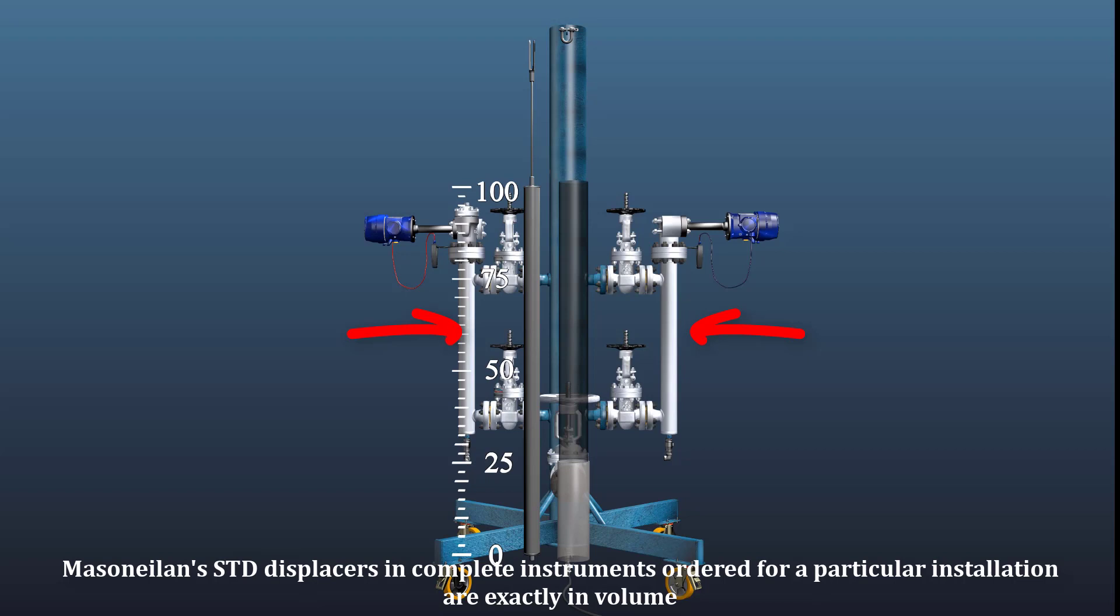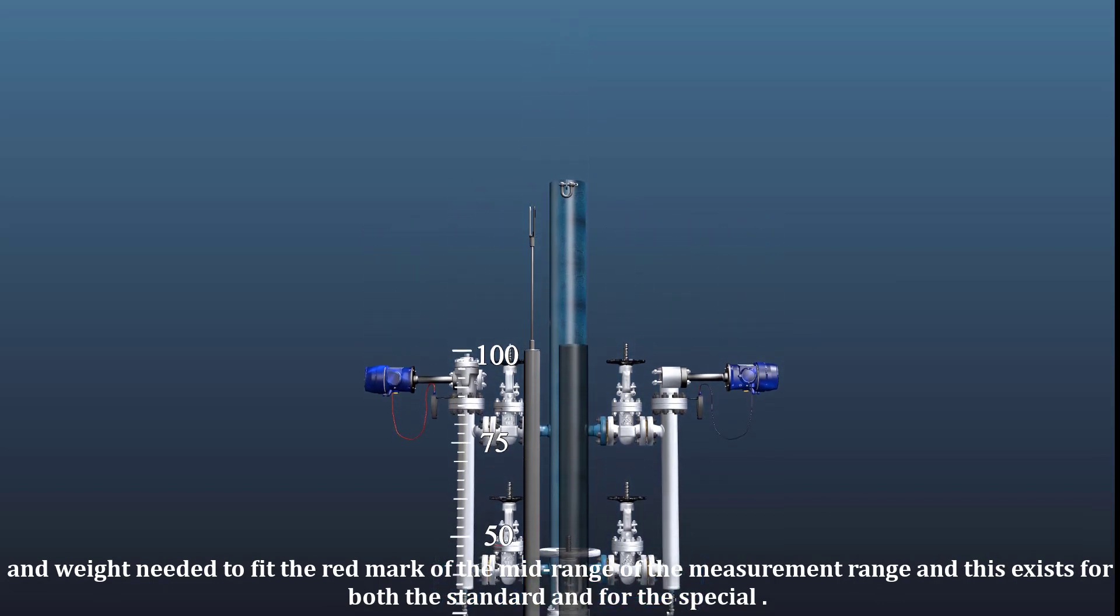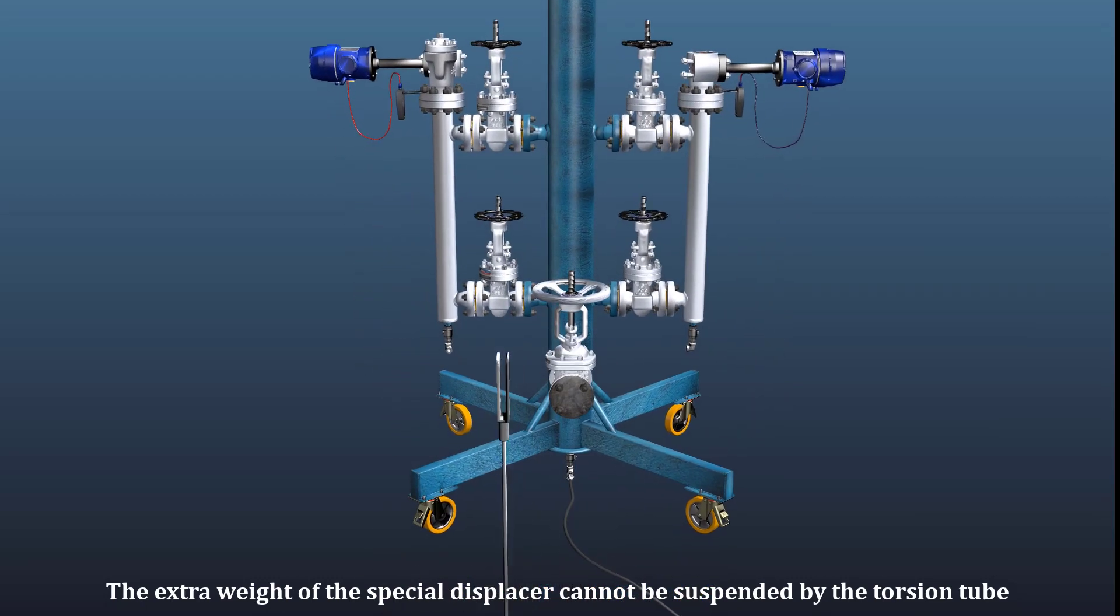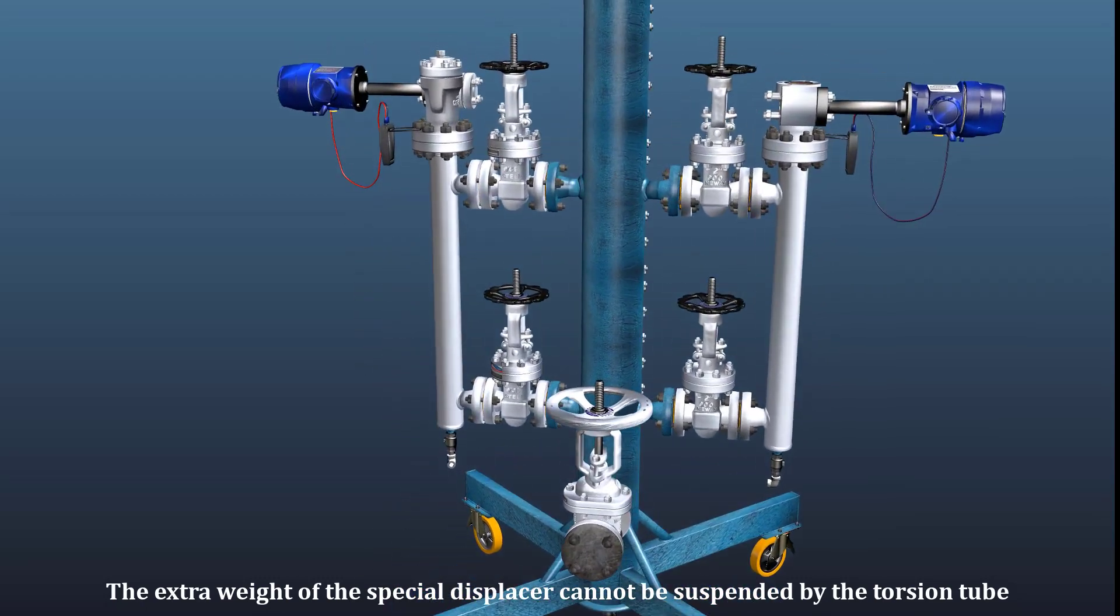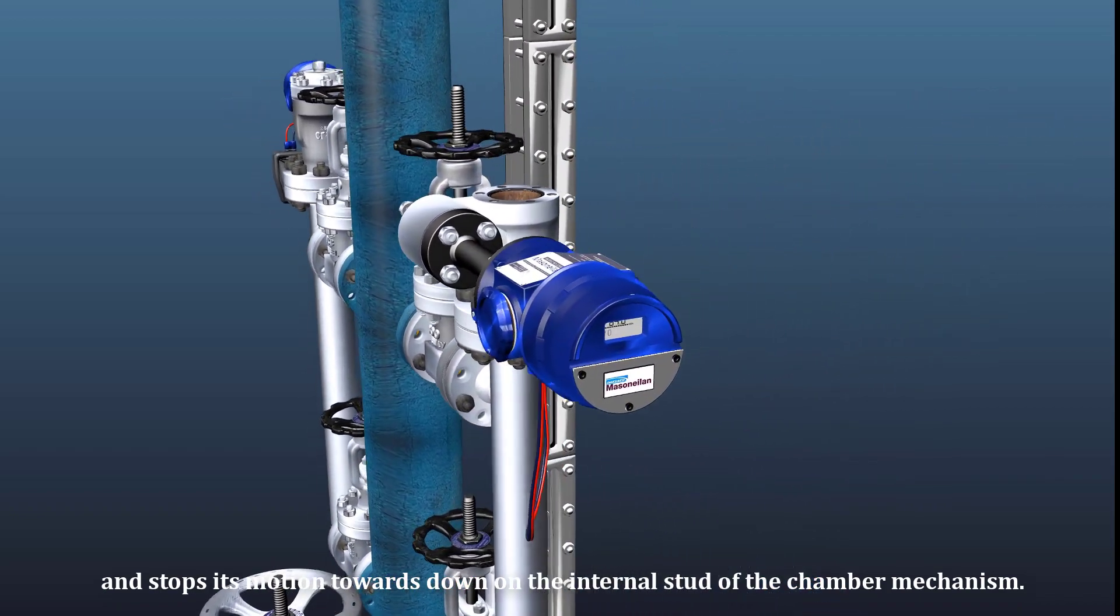Masoneilan's STD displacers and complete instruments ordered for a particular installation are exactly in volume and weight needed to fit the red mark of the mid-range of the measurement range, and this exists for both the standard and for the special. The extra weight of the special displacer cannot be suspended by the torsion tube and stops its motion towards down on the internal stud of the chamber mechanism.